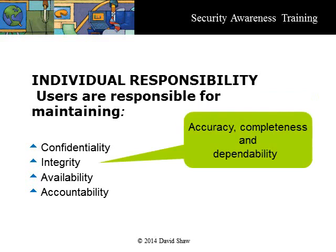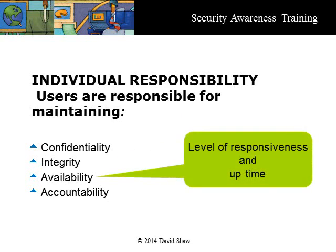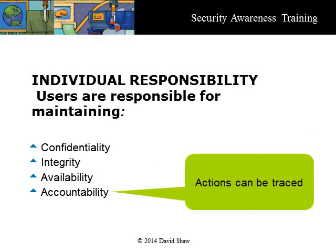Integrity is the required level of accuracy, completeness, and dependability of the programs, services, and information being handled by the information system or its assets. Availability is the required level of responsiveness of programs, services, and information being provided by the information system to support its stated mission. Accountability ensures that the actions of an entity may be traced uniquely to that entity.